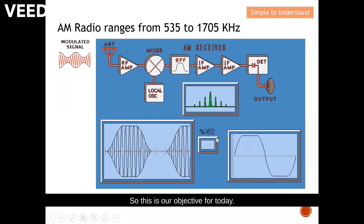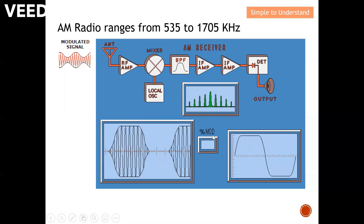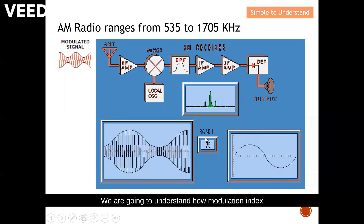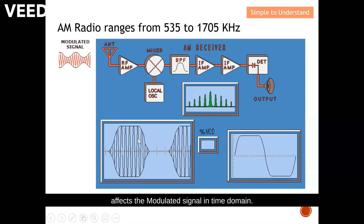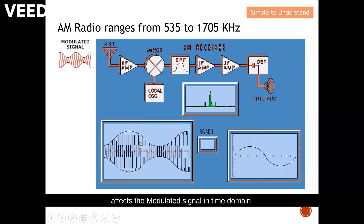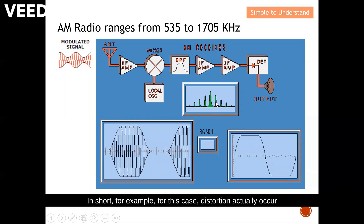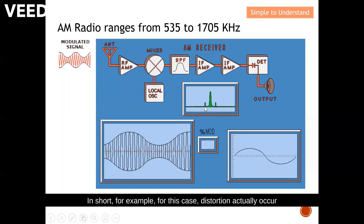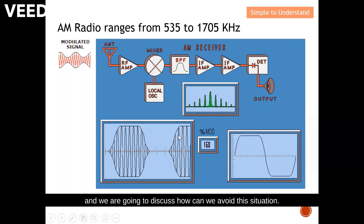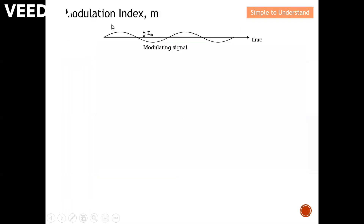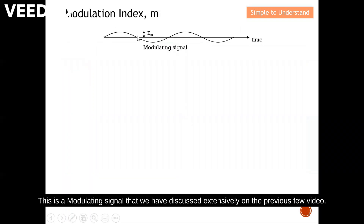Our objective for today is to understand how the modulation index affects the modulated signal in the time domain. For example, in some cases distortion actually occurs, and we are going to discuss how we can avoid this situation. This is the modulating signal we have discussed extensively in the previous few videos.